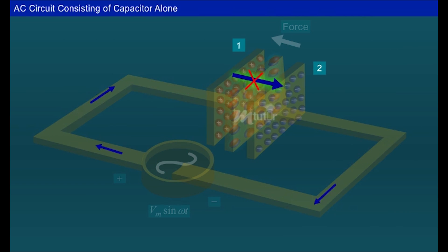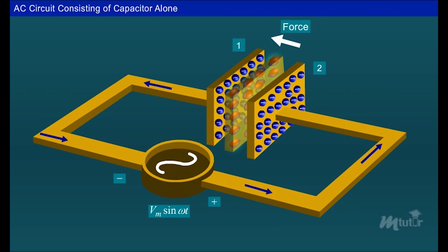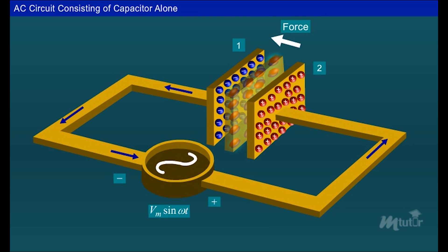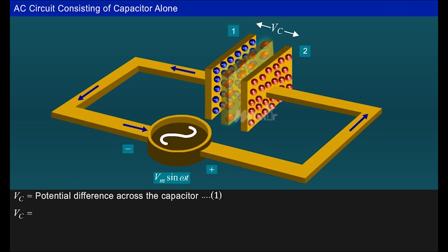During the negative half cycle, the polarity of the supply voltage is reversed, and the capacitor charges in the opposite direction. Due to charging, a potential difference is developed between the capacitor plates. At any instant of time, the potential difference across the capacitor equals the applied AC voltage, Vm sin ωt.